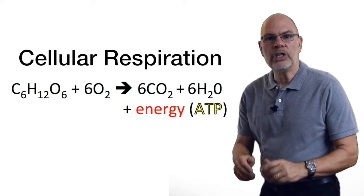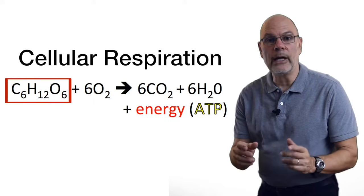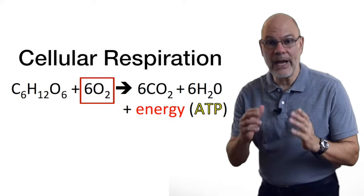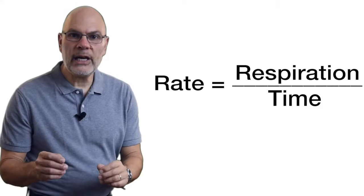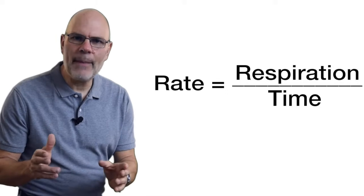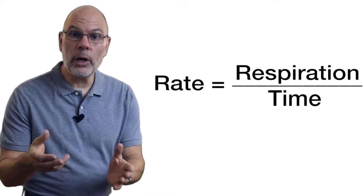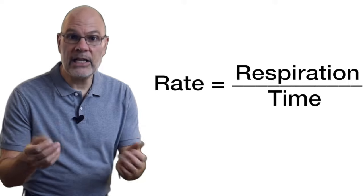During cellular respiration, living things take a fuel like glucose and oxidize it to create ATP. The waste products are carbon dioxide and water. The rate of cellular respiration, how much of it happens over time, depends on the organism, its activity, and its environment.